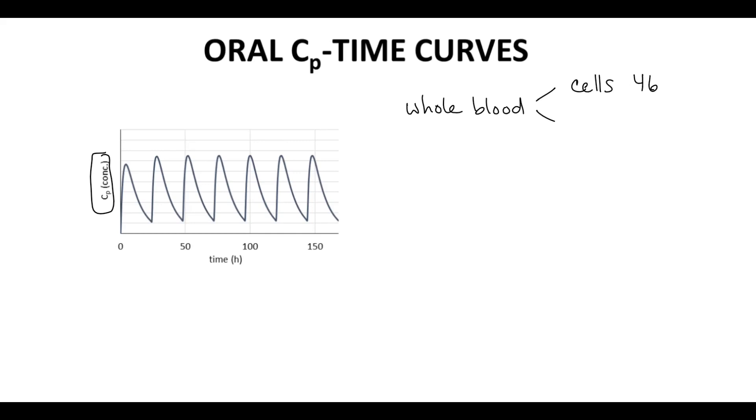Cells are about 46% of the volume of whole blood. What's left is a fluid called plasma, which is about 54% of the volume. Plasma contains water, electrolytes, proteins, and the drug that we are trying to analyze.